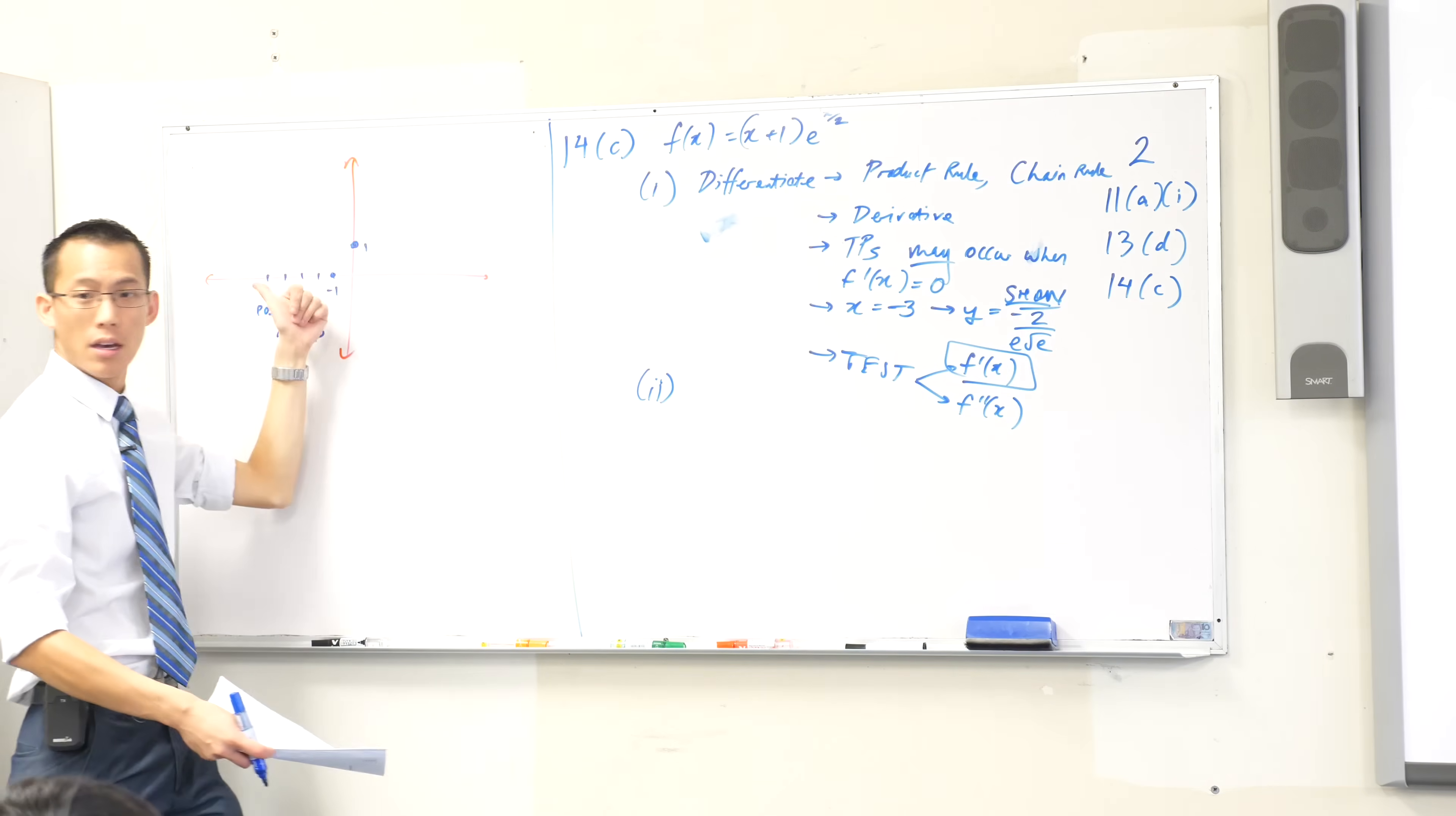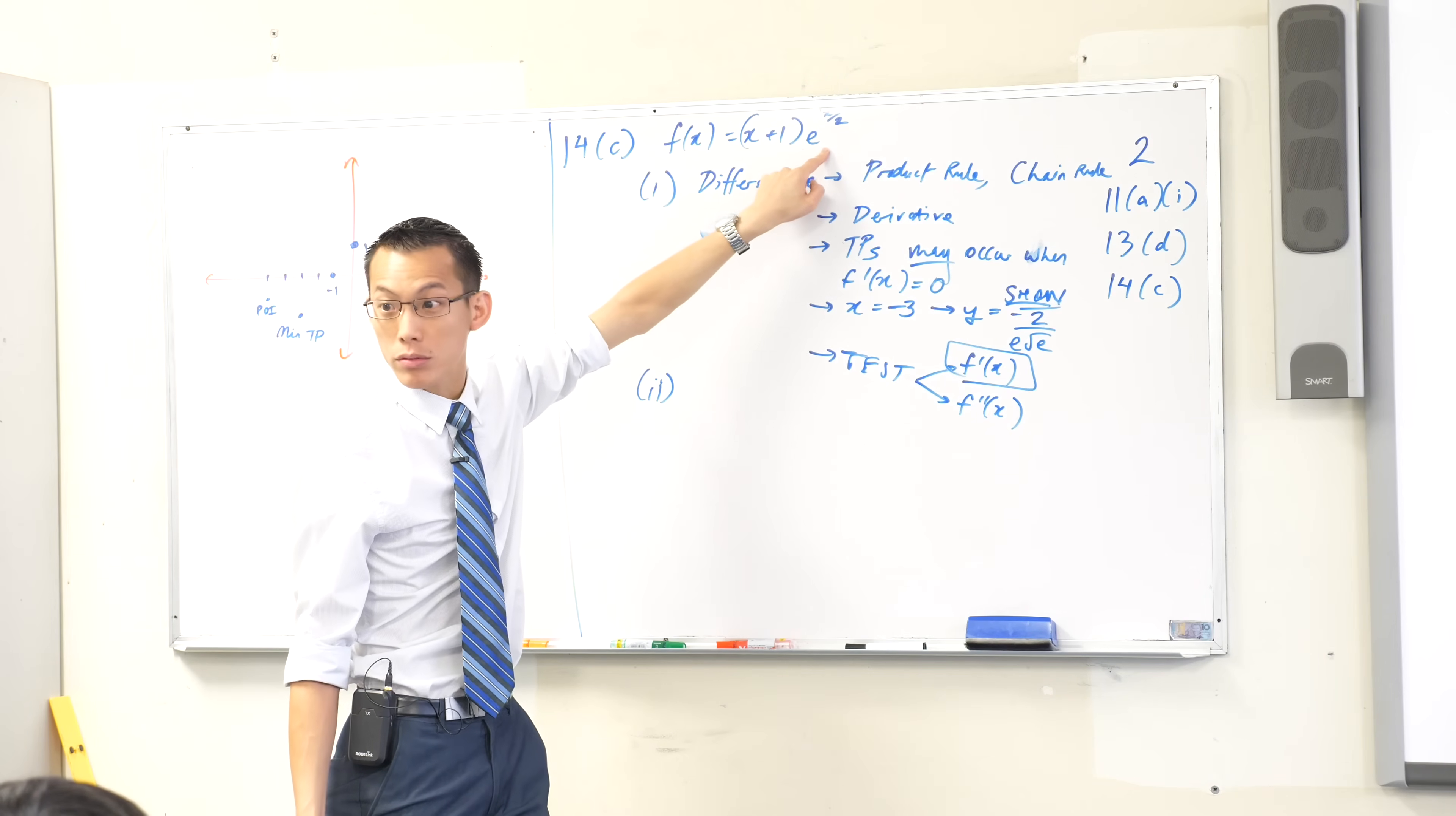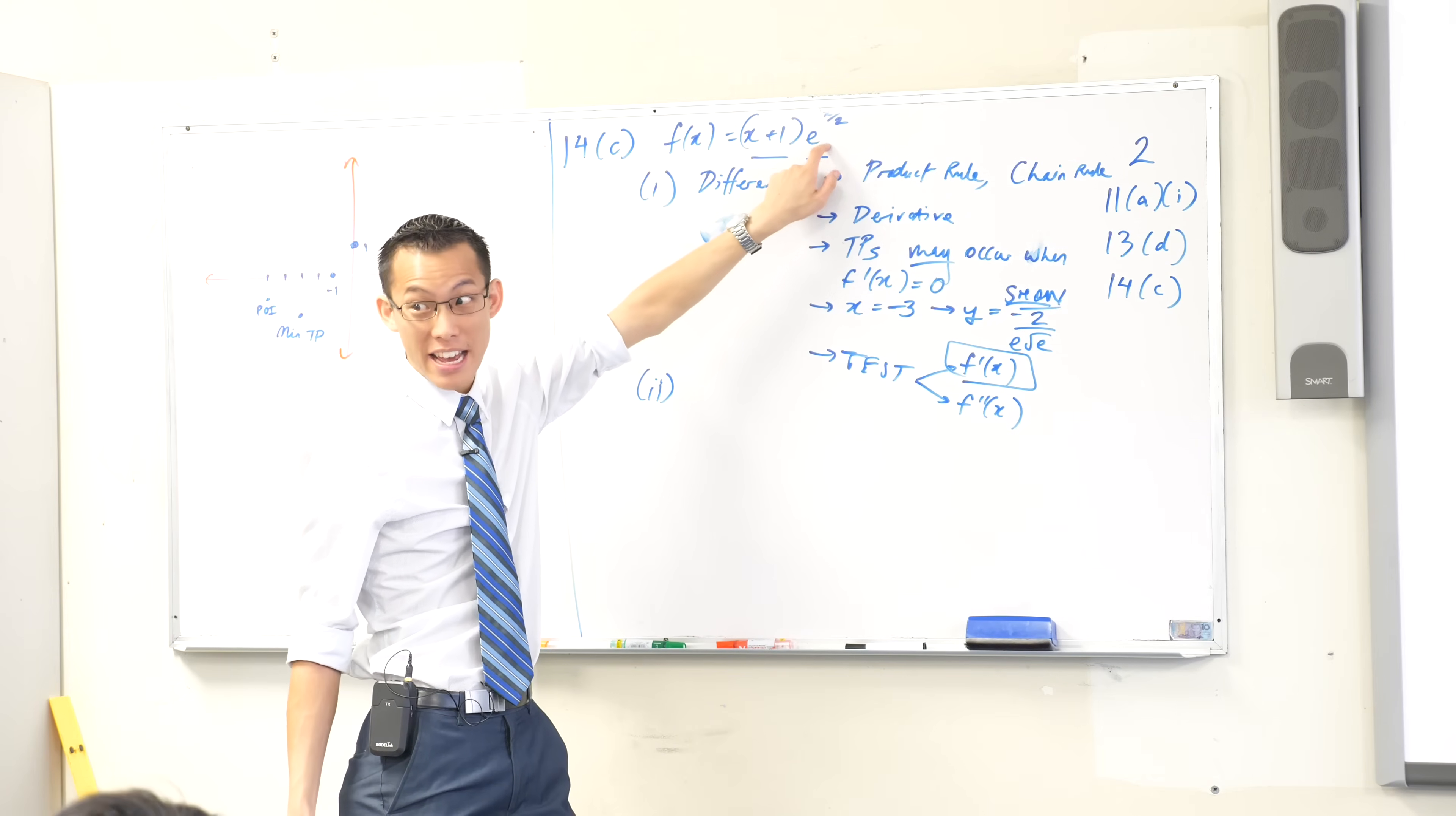What about on the other side? What happens when x gets really small? Sorry, really negative, I should say. This becomes negative infinity. But what does this become? When x is really, really negative. It becomes really tiny. Now the question then becomes, well, which one wins? So this is growing at a linear rate, right? But this is decreasing at an exponential rate. So which one takes over?